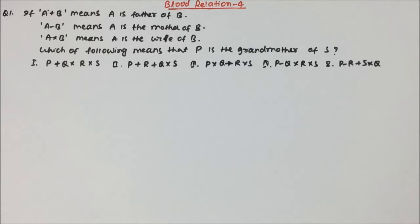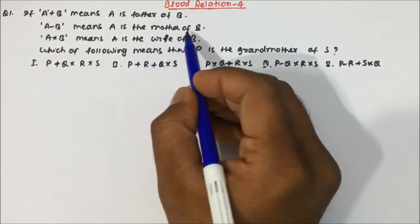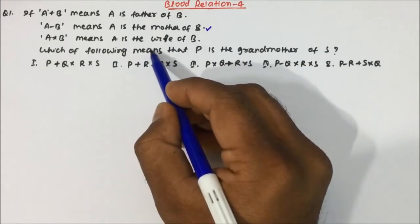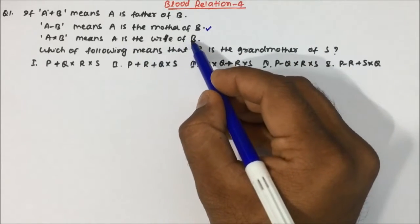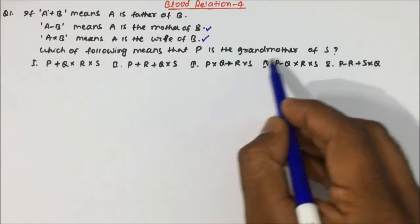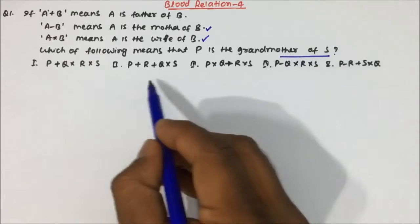Before solving, we will learn the normal method — how to use the blood relation tree. Then I will tell you the shortcut to identify the answer. Now, 'a + b' means a is father of b, 'a - b' means a is mother of b, and 'a × b' (a cross b) means a is wife of b.